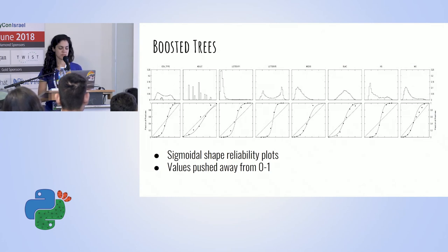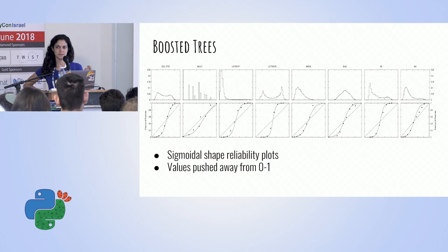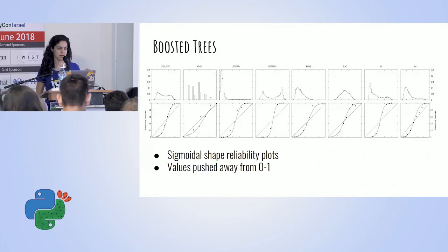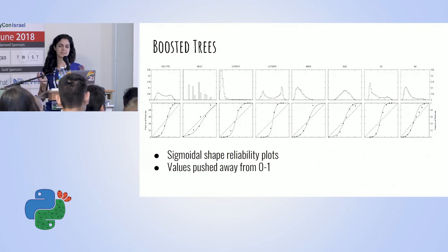Why do boosted trees show this behavior? Because boosted trees average over different models. For boosted trees to assign a probability of exactly one to a sample, all constituent models must agree and output exactly one. If we add any noise, some models give something slightly lower than one, and the final averaged value is also lower than one. So the values are pushed away from one — and the same logic applies at zero, since the variance is one-sided at both extremes.